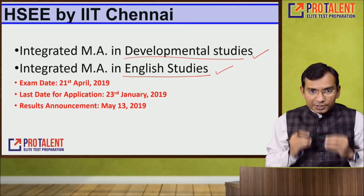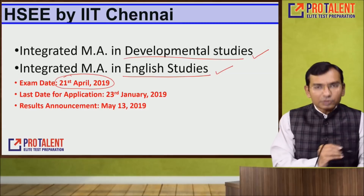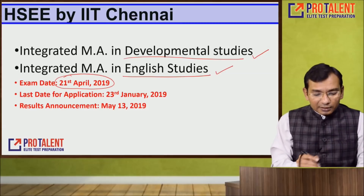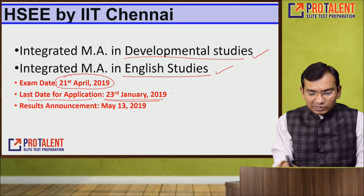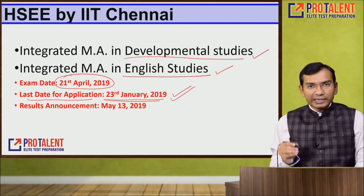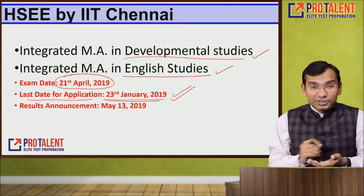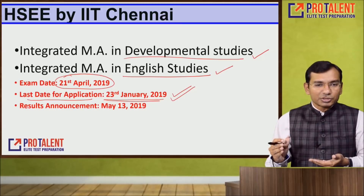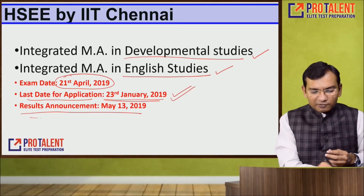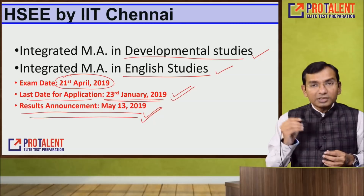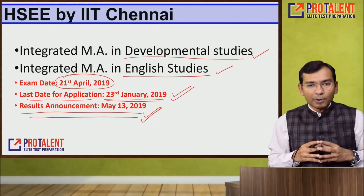The exam date this year is 21st April 2019, and the last date to apply is 23rd January 2019. Keep a separate note for this last date. The examination result will be announced on 13th May. This is the basic information about HSEE.